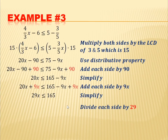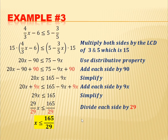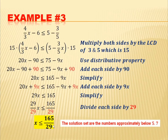We divide both sides by 29 to eliminate 29, leaving x is less than or equal to 165 over 29. The fraction 165 over 29 is not reducible, so this is our final answer. Converting to decimal, our solution set is all numbers approximately below 5.7.